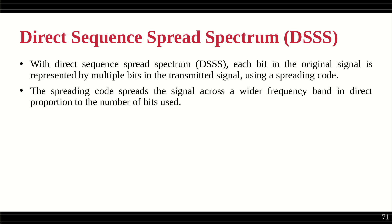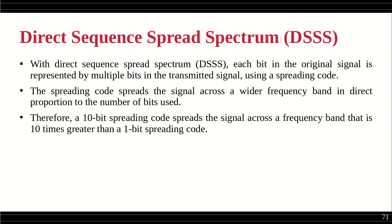As a result, the frequency is also increasing because we are keeping the time period fixed. Suppose you are using a 10-bit spreading code — each bit in the input signal will be spread over 10 bits, represented by 10 bits in the output. This spreads the signal across a frequency band 10 times greater. So if the original frequency is f, after spreading with a 10-bit spreading code the new frequency will be 10 times the original.